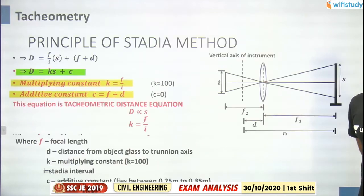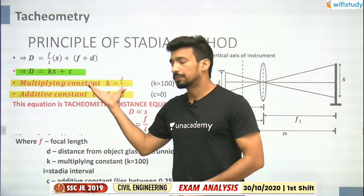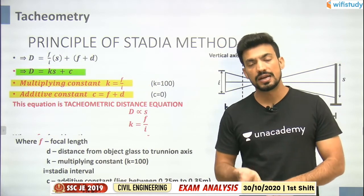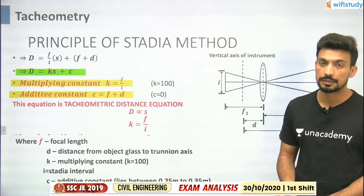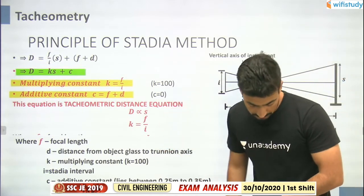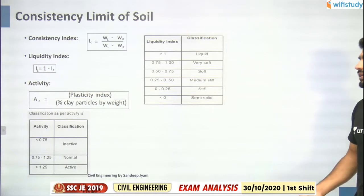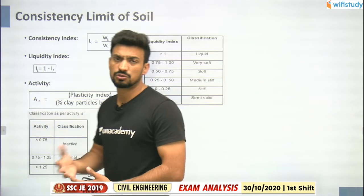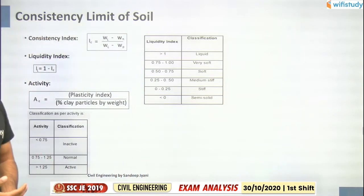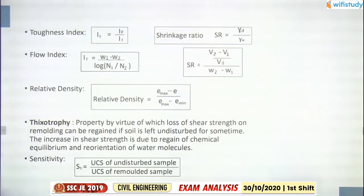Next - tachymetry related questions. The same numerical may appear on additive constant and multiplying constant - they always ask these. Revise quickly. Next - consistency limits of soil: what is shrinkage limit? Consistency index, liquidity index, activity - go through these once before appearing in the exam.